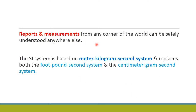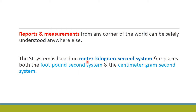Reports and measurements from any corner of the world can safely be understood anywhere else. Whatever reports and measurements are generated from anywhere in the world will follow the same method and should be understood by everyone. The SI system is based on the meter-kilogram-second system and replaces both the foot-pound-second system and the centimeter-gram-second system, which are the older systems.